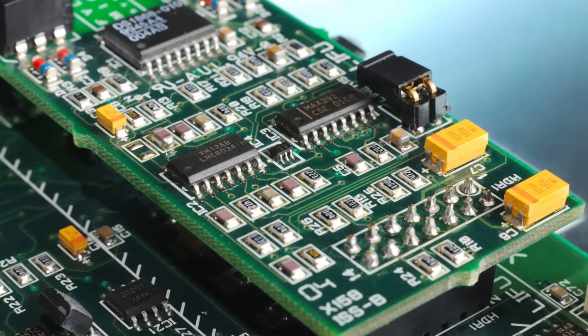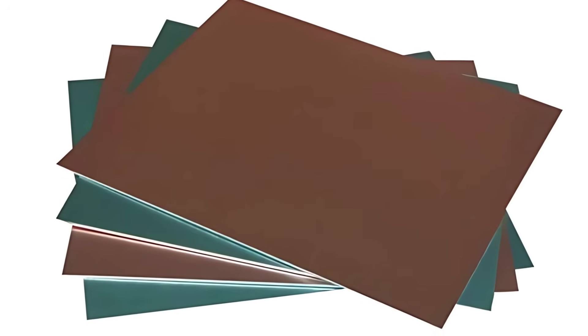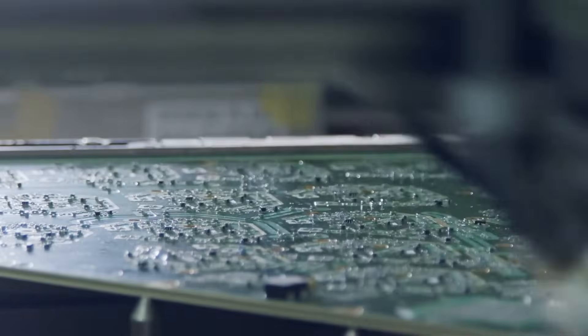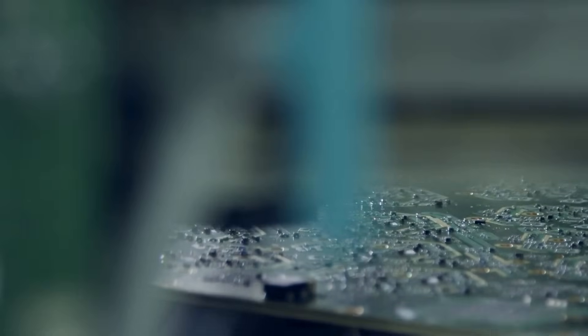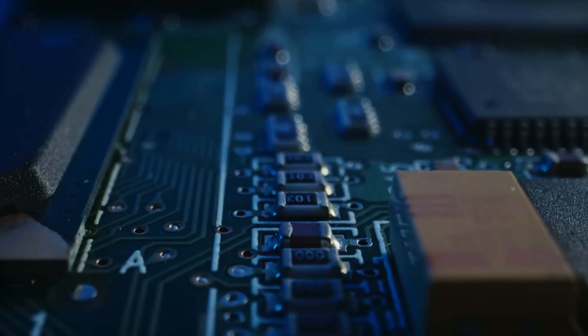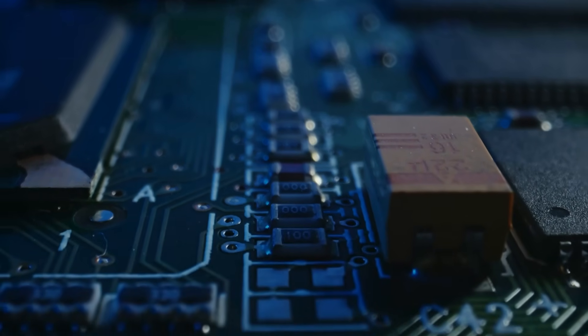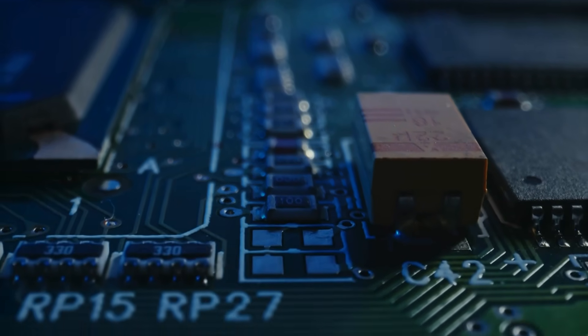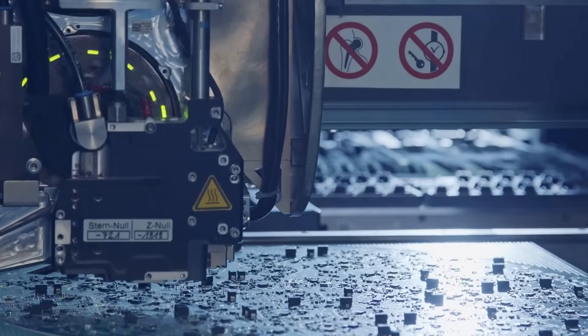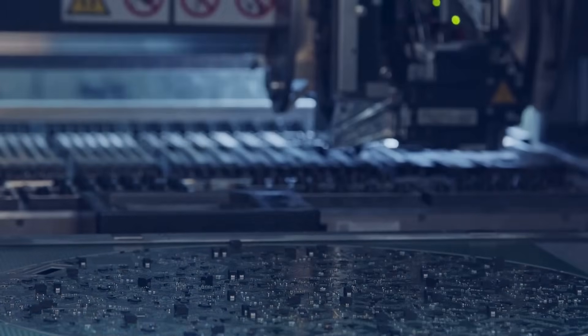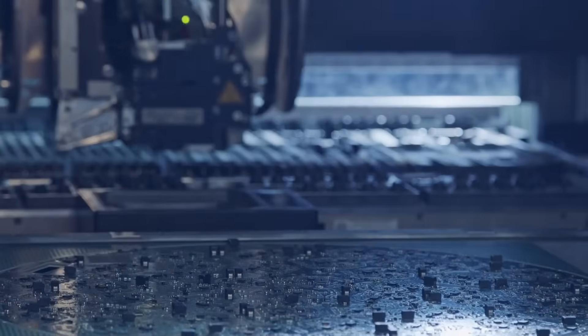And there you have it. A printed circuit board, starting as a blank sheet of fiberglass and copper, transformed through an intricate multi-step process into the foundation of modern electronics. It's a blend of chemistry, engineering, and precision automation, all working together to make the devices we rely on every day possible. Next time you look at a circuit board, you'll know just how much technology and craftsmanship lies beneath that glossy green surface.